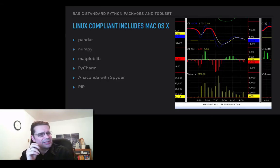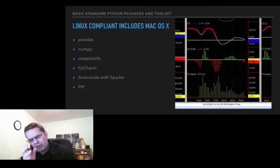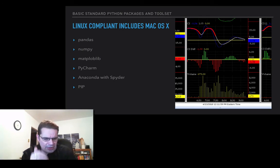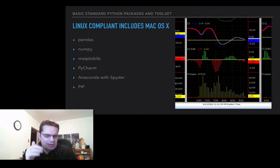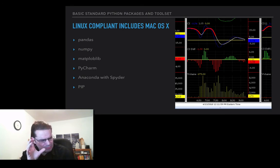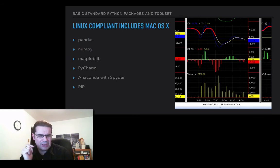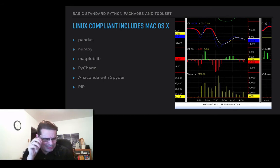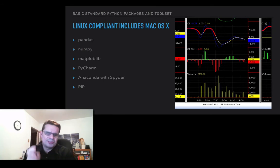What are some of the basic standard Python packages you should be using? From my experience, what held me back from using Python a few years ago was being on Windows. Python is really friendly on Linux-compliant operating systems, and of course that includes Mac OS X, which this video is being recorded on. The top three packages used not just for data science and big data but specifically for finance include Pandas, NumPy, and Matplotlib. Tools that are free include PyCharm, and the one I'm really starting to dig is Anaconda, specifically Spyder. Also, pip install is a great package manager.